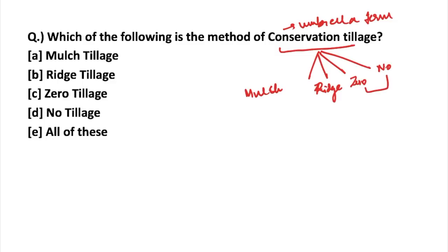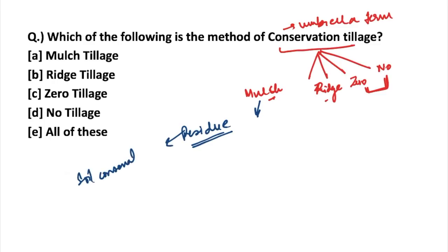Zero and no tillage are quite similar. Mulching, mulch farming, and stubble mulching are all the same thing. The residue of the previous crop is left undisturbed on the soil, which helps in soil conservation from erosion. Also, when the crop residue is left undisturbed on the soil, the nutrients can be used for the next cropping season — this is known as stubble mulching tillage.